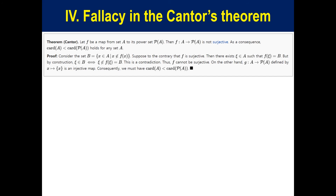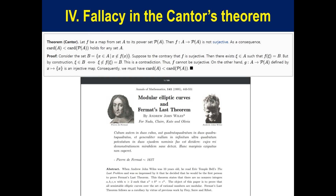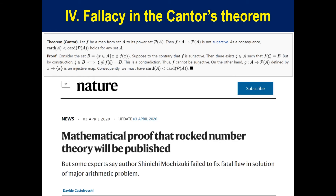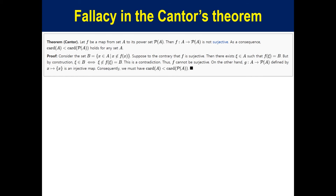Then, I show a fallacy in Cantor's Theorem. The famous proof of Fermat's Last Theorem by Andrew Wiles is 109 pages long. There is a recent stir that the ABC conjecture is finally proven, but some experts say that the author, Japanese mathematician Shinichi Mochizuki, failed to fix a fatal flaw in the solution. This paper is 600 pages long. Both proofs are very long so that there may be an error lurking somewhere. But the proof of Cantor's Theorem is just 3 lines long — how can this proof have an error?